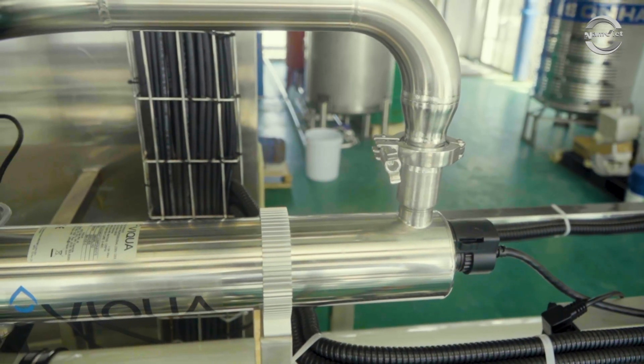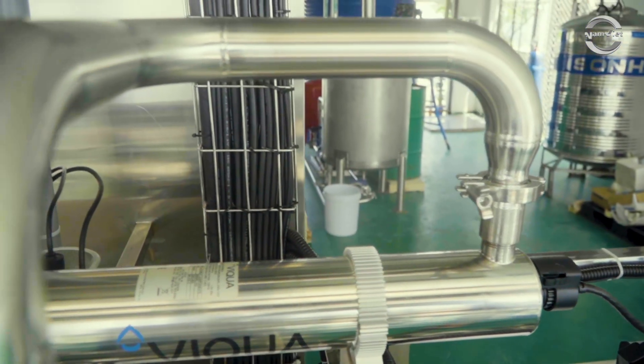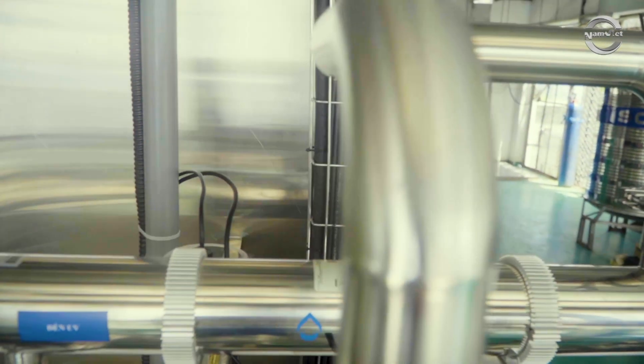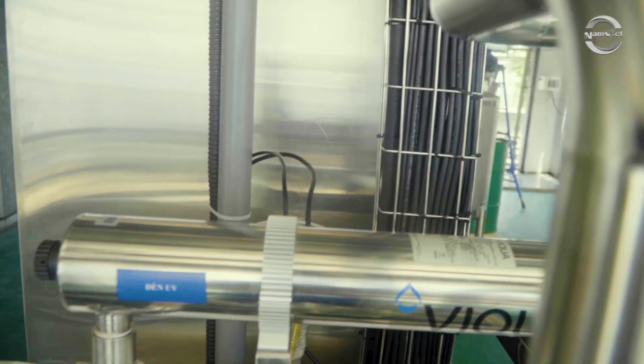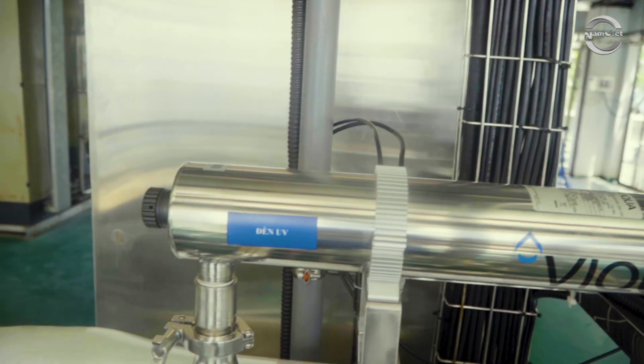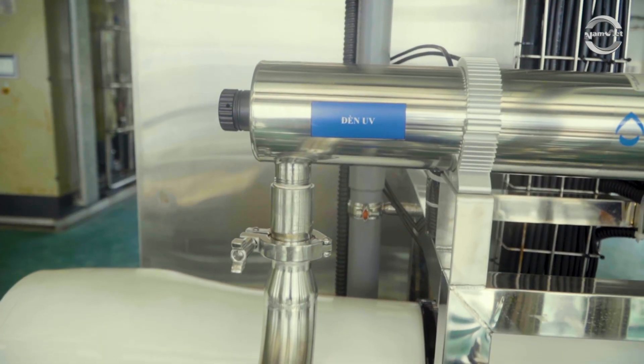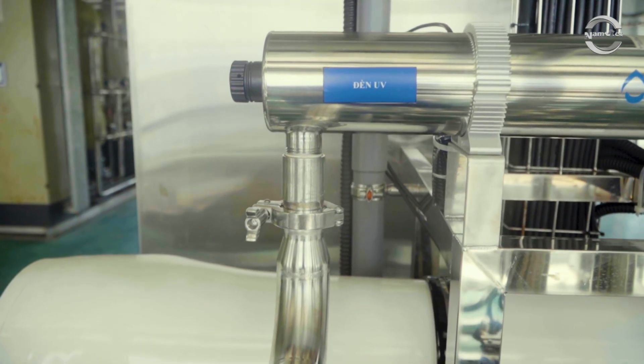In principle, water after RO treatment no longer contains harmful bacteria or viruses. However, to minimize the risk of recontamination, the water should pass through a UV disinfection lamp for additional sterilization, then through a 2 micron fine filter, also known as a post-bacterial filter, before entering the storage tank.